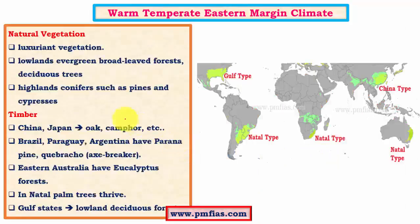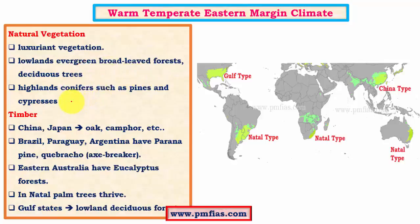Coming to natural vegetation, one favorable condition is the uniform distribution of rainfall throughout the year, which supports luxuriant vegetation. In the lowlands, trees are usually evergreen with broad leaves, for example oaks and certain deciduous trees. In the highlands, the trees are conifers like pines and cypresses. So both hardwood and softwood are available. Evergreen broadleaved forests have hardwood whereas conifers are softwood. The lumbering industry is comparatively more lucrative here than in humid tropical climates where there is only hardwood, which is heavy, doesn't float readily in water, and doesn't occur in pure stands.